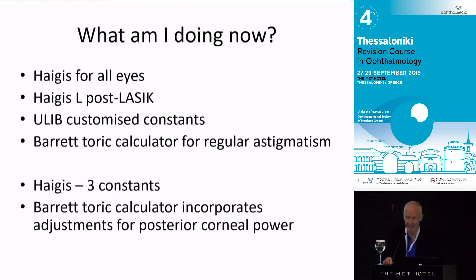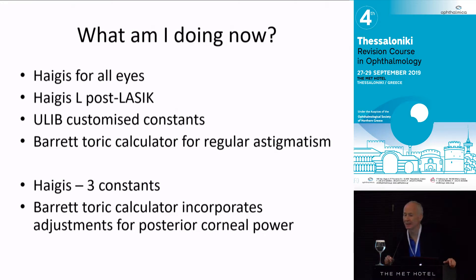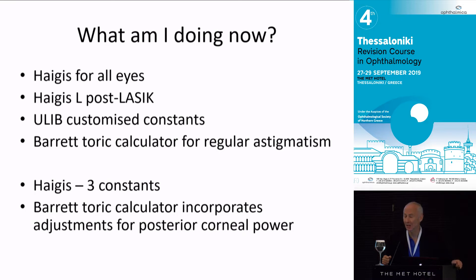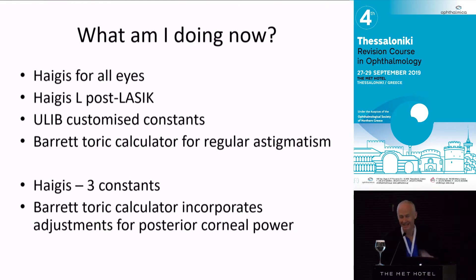For regular astigmatism, we're using the Barrett calculator available online from Alcon — it's free, anyone can use it, and it works really well. One important thing: the Barrett online calculator already makes the adjustments for posterior corneal astigmatism for you. Posterior corneal astigmatism tends to give an against-the-rule result, so you need to overcorrect against-the-rule and undercorrect with-the-rule keratometric cylinders. Doug Couch has a nomogram for that, but it's already built into the Barrett calculator. Don't do a double correction — don't use the Barrett calculator and then apply the nomogram as well.